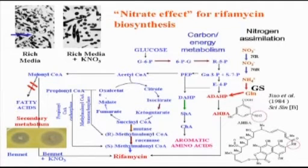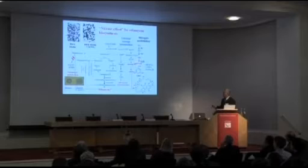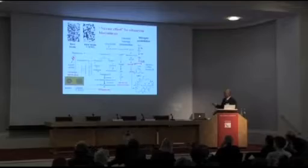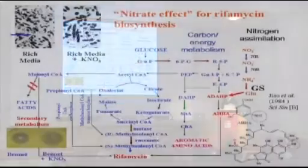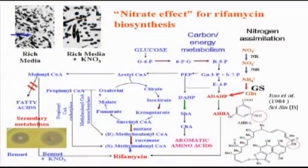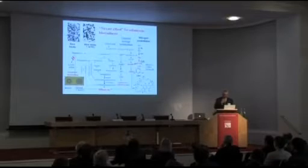My major professor also studied another important part of the fermentation industry: producing antibiotics. This is now very important — rifamycin is a first-line medicine for TB treatment. He found a highly significant correlation between nitrogen source and the yield of antibiotics, which is called the nitrate effect for rifamycin biosynthesis. This effect goes through all the pathways of the elementary metabolic pathways.